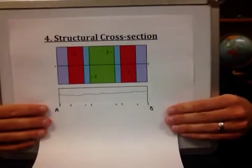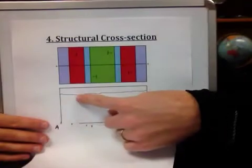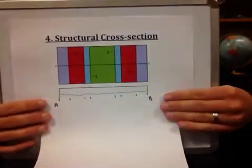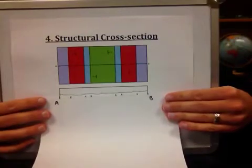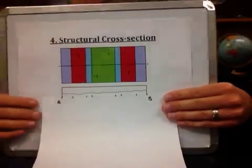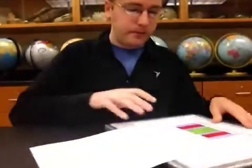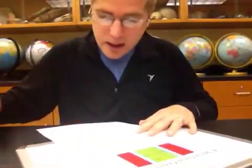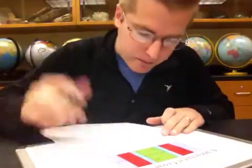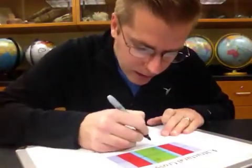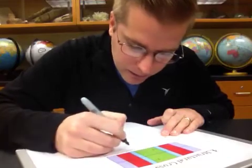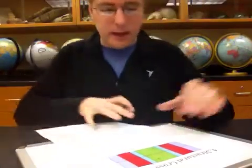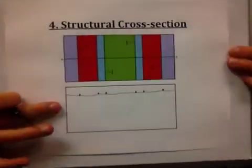We are going to go down to our topographic profile, which has already been done for us, and on our topographic profile, we are going to make a tick mark for each of the contacts that we have put on our scrap sheet of paper, going from A to B. Hold your scrap sheet of paper up, and then transfer those tick marks onto the topographic profile.